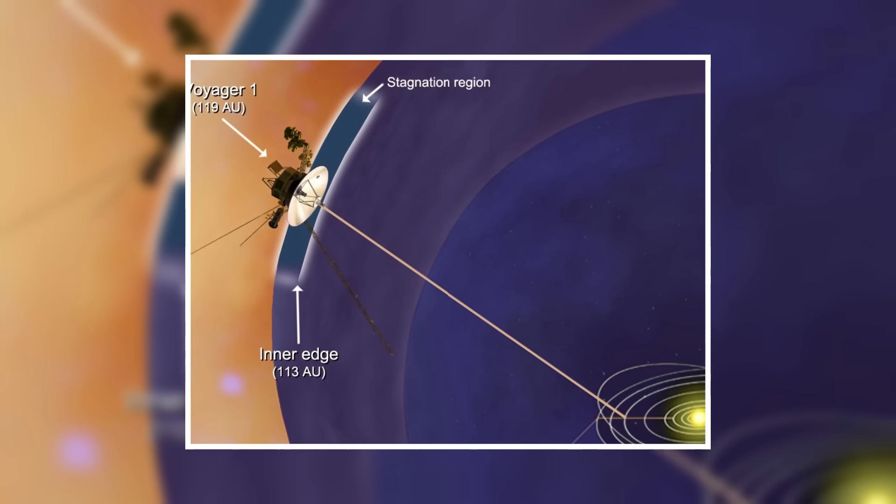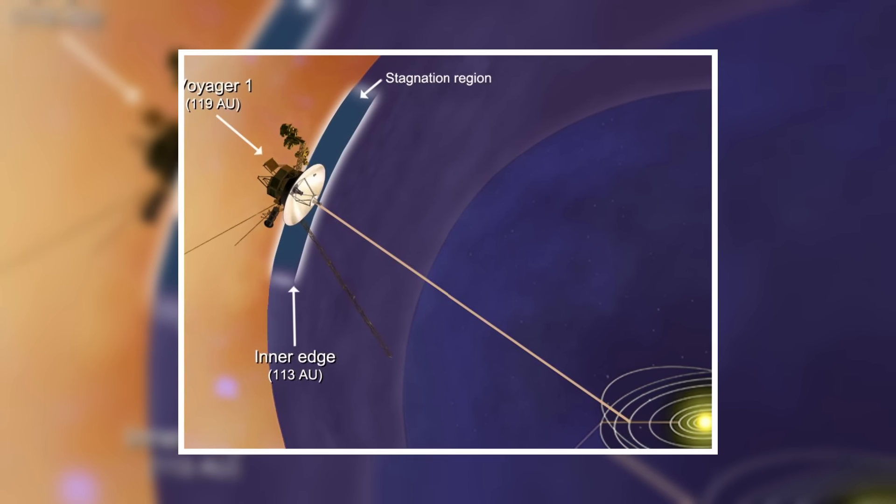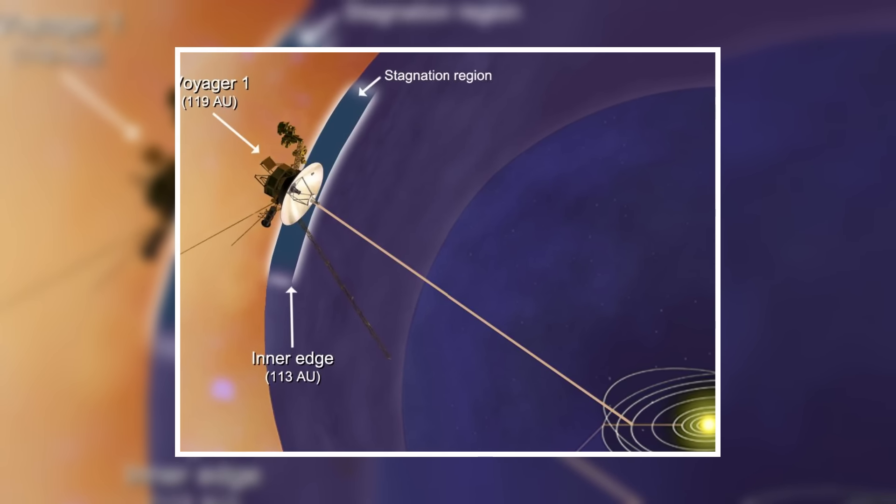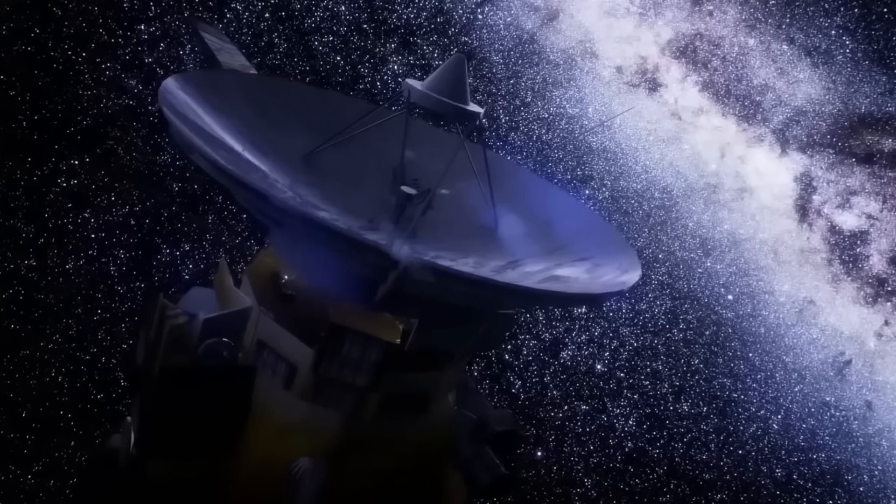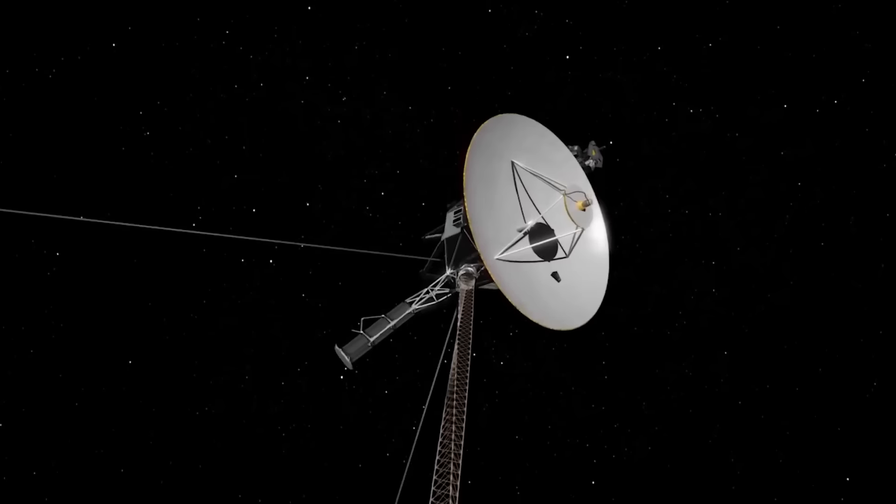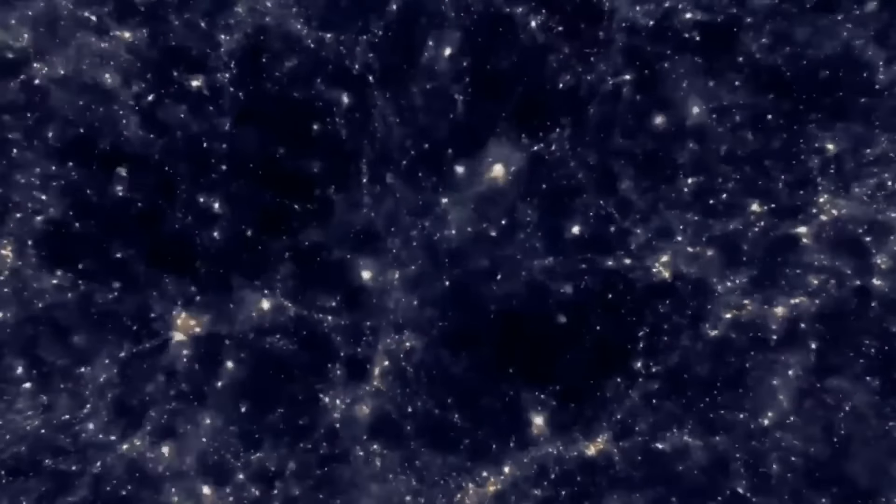Additionally, Voyager 1 was the first spacecraft to reach the solar system's edge. There was a greater probability of something going wrong, and it was a far riskier route. For Voyager 1, becoming lost in outer space was a very real possibility.